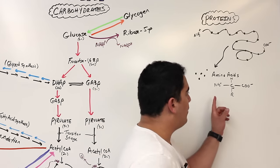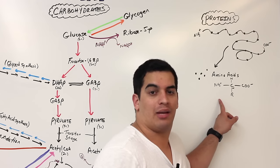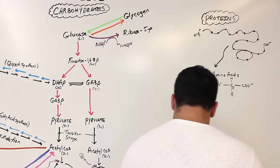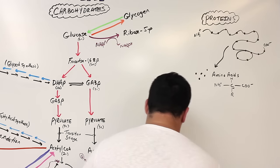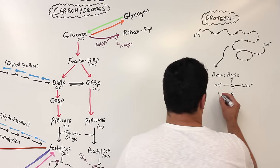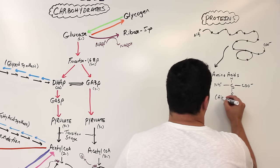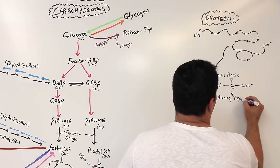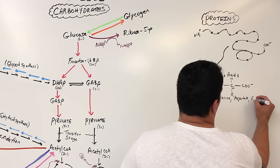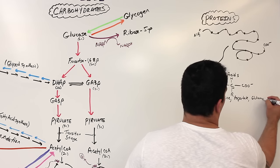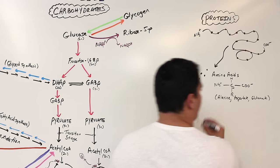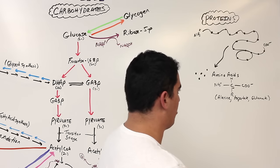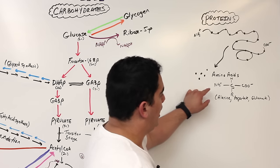In certain situations, there are some special amino acids that can be utilized for energy. The main ones our body utilizes — and you can utilize many amino acids — but some of the more commonly used ones are alanine, aspartate, and glutamate. These are some of the main ones used in large amounts.